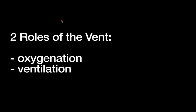The simplest way to think about the ventilator is to remember the two goals of breathing in general: oxygenation and ventilation. Oxygenation is ensuring adequate oxygen supply to the bloodstream, while ventilation refers to CO2 and the ability to remove it from the blood. Oxygenation is most commonly measured through pulse oximetry, and ventilation most typically through serial blood gases.